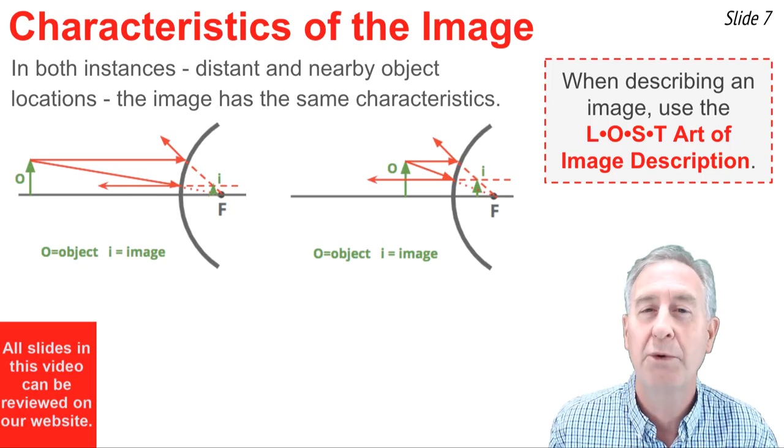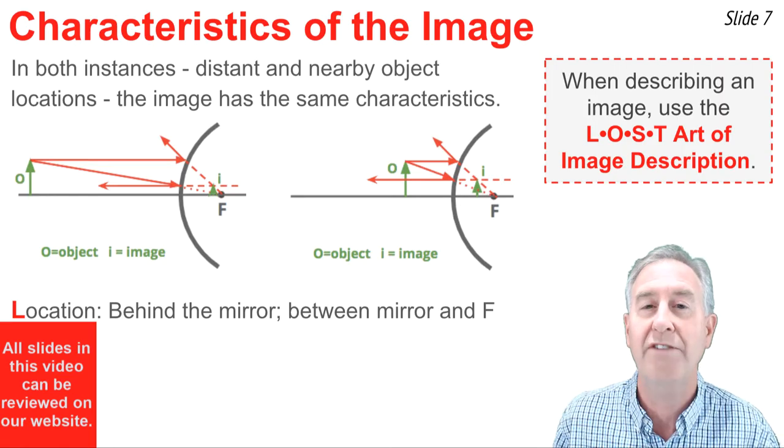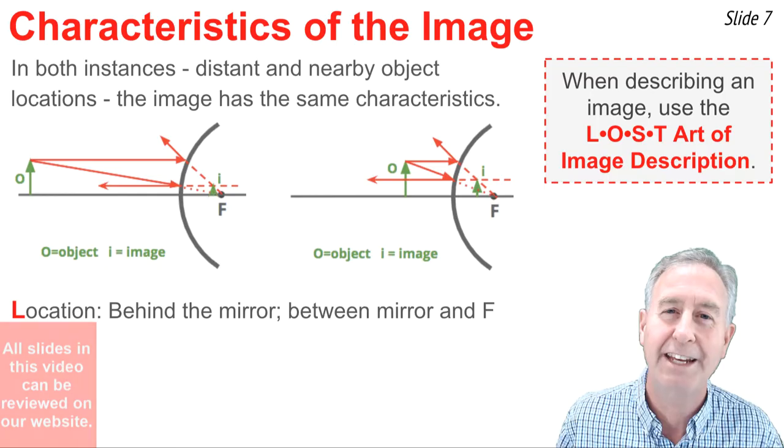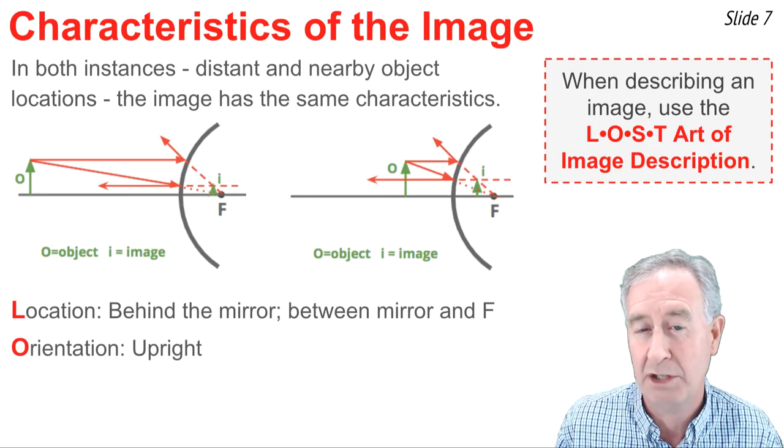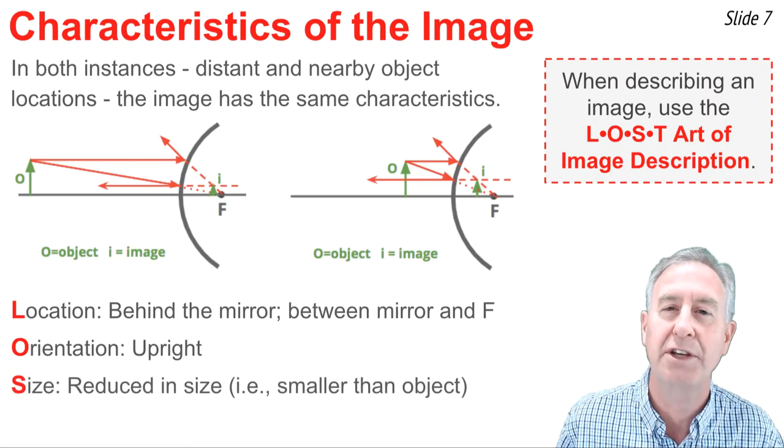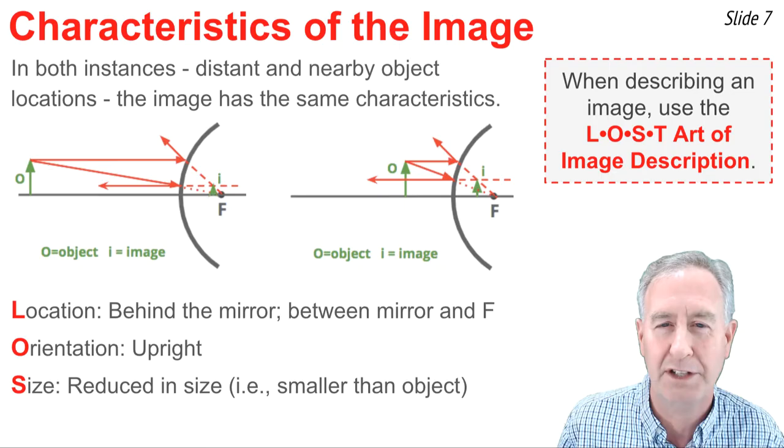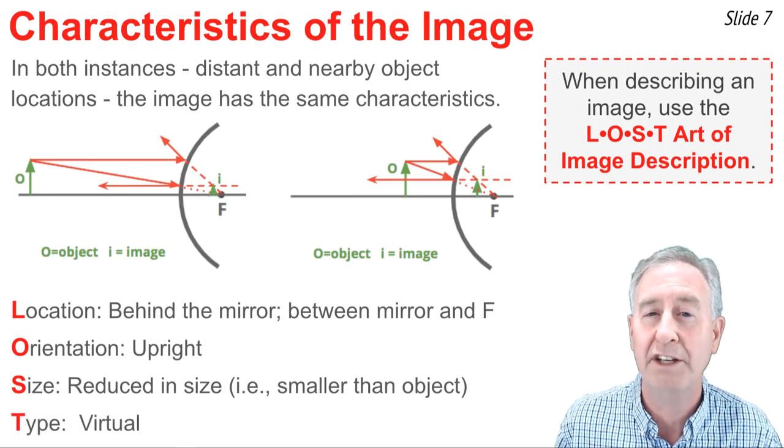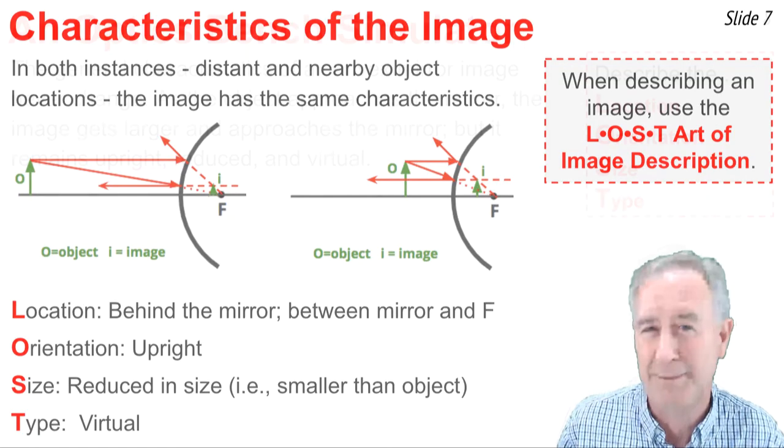When it comes to convex mirror images, we've seen that in both instances, the location of the image is behind the mirror, on the opposite side of the object, and it's in between the focal point and the mirror surface. The orientation of these images is upright, meaning not flipped over relative to the object. And the size is reduced in size relative to the object, that is smaller than the object itself. The type of image is a virtual image. We know that because the reflected rays are diverging after reflection. They had to be traced backwards to an intersection point behind the mirror.